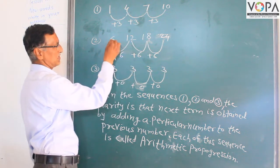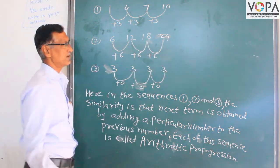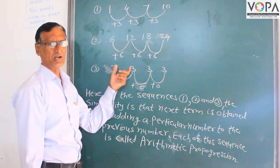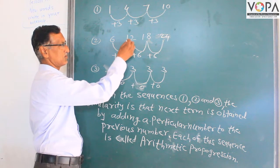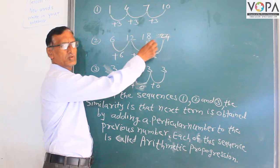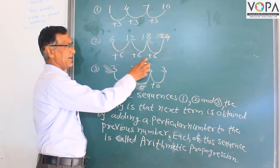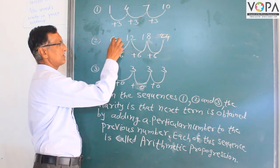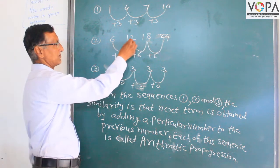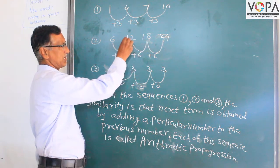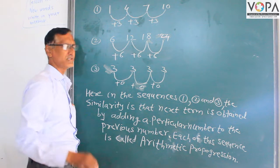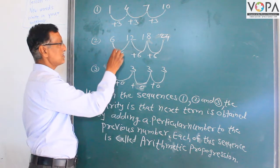Another example is 6, 12, 18, 24, where 6 is added each time. The same number is added to every term: 6 plus 6 equals 12, 12 plus 6 equals 18, and 18 plus 6 equals 24. The same number is added throughout, making this a sequence.